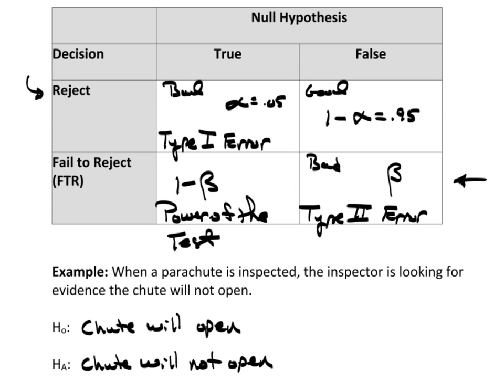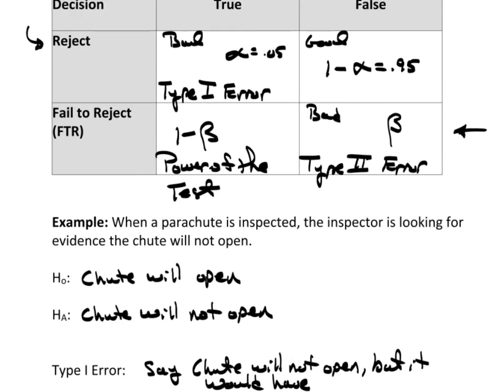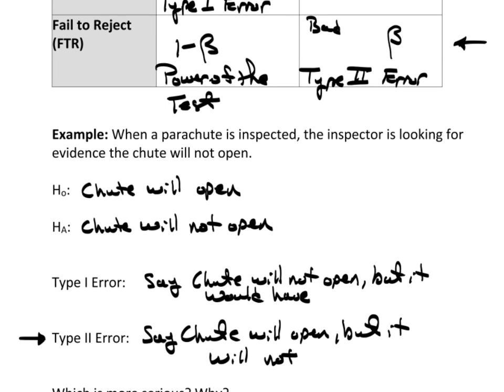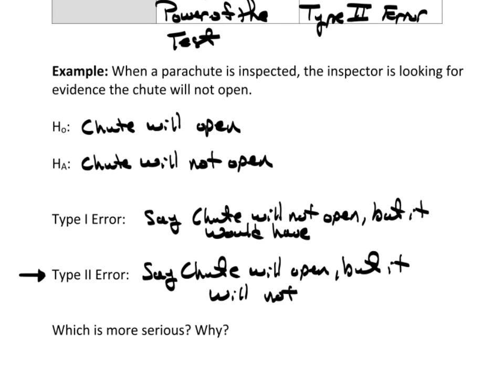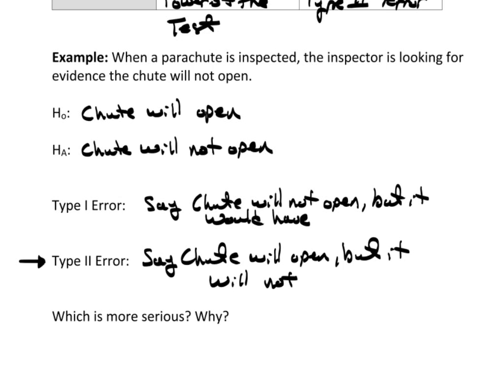Yeah, I know, if you jump, you have a reserve and all that kind of stuff, but let's not get too deep into it. So, you get the idea here, in this scenario, a type 2 error would be worse. And that's why. We just discussed why.